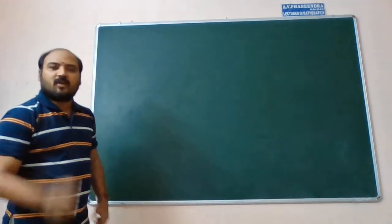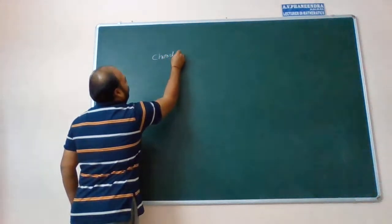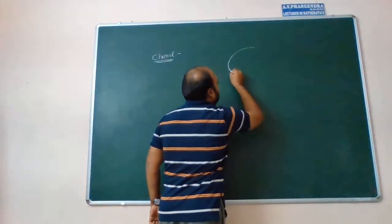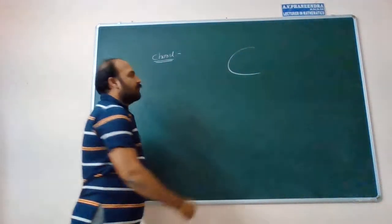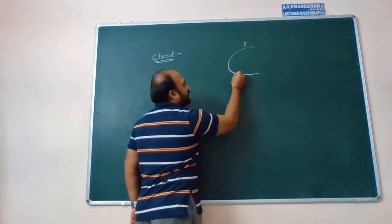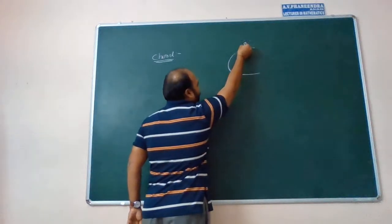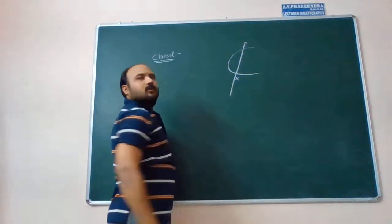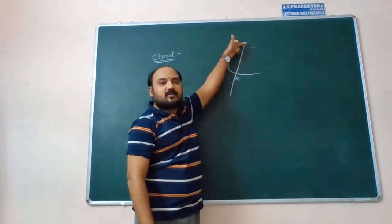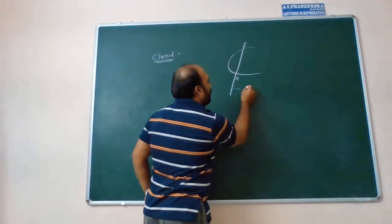First of all, what is the meaning of chord? Chord of parabola. So y squared equal to 4x is the parabola. Take P and Q as two points on the parabola. Join P and Q. The equation of a line passing through two points which are lying on the parabola is called the chord of the parabola.